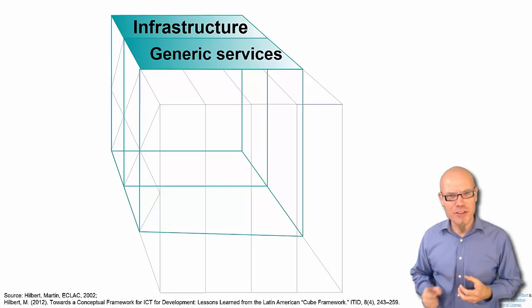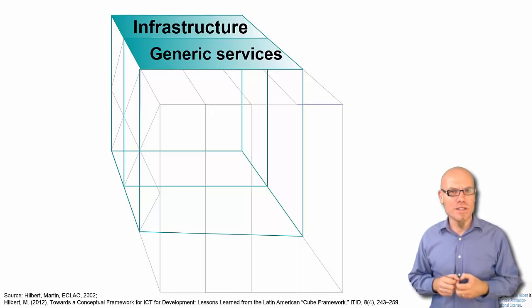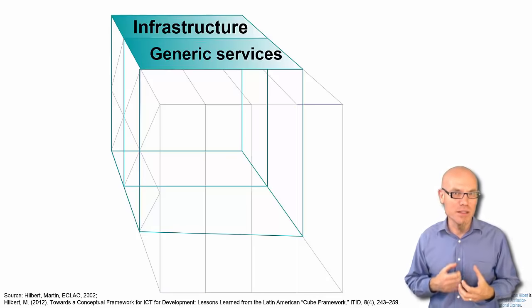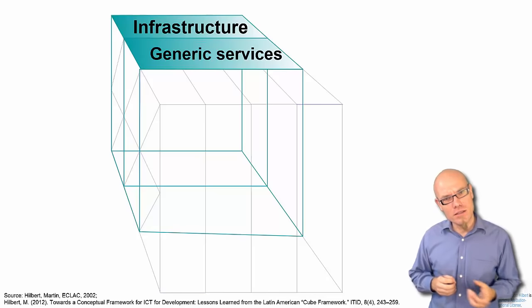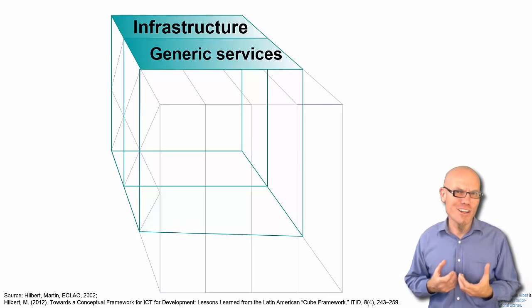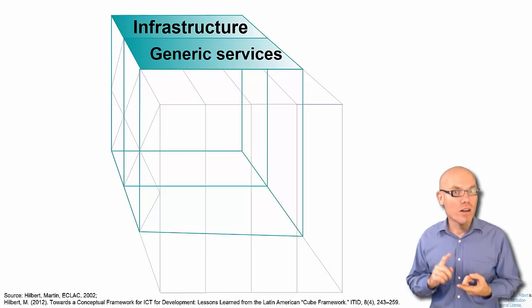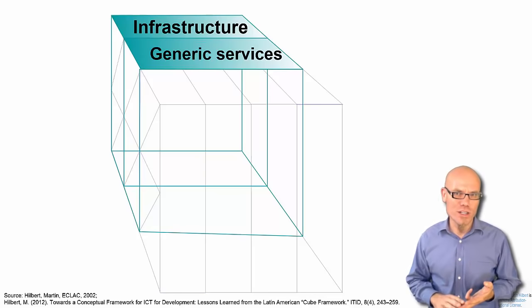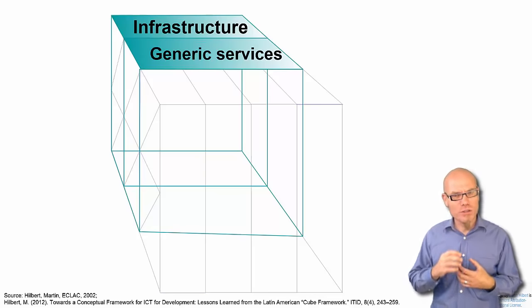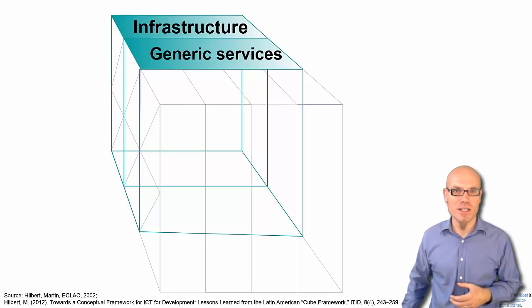We basically distinguish between everything that is tangible and intangible. The tangible infrastructure — the first infrastructure layer — refers to everything you can touch: all the hardware, computers, mobile phones, cell phone towers, modems, cables, and so forth. The generic service layer then refers to software, things you cannot necessarily touch — all the apps on your phone, email services, social networks, and so forth. Both hardware and software create the technological foundation of the digital age.